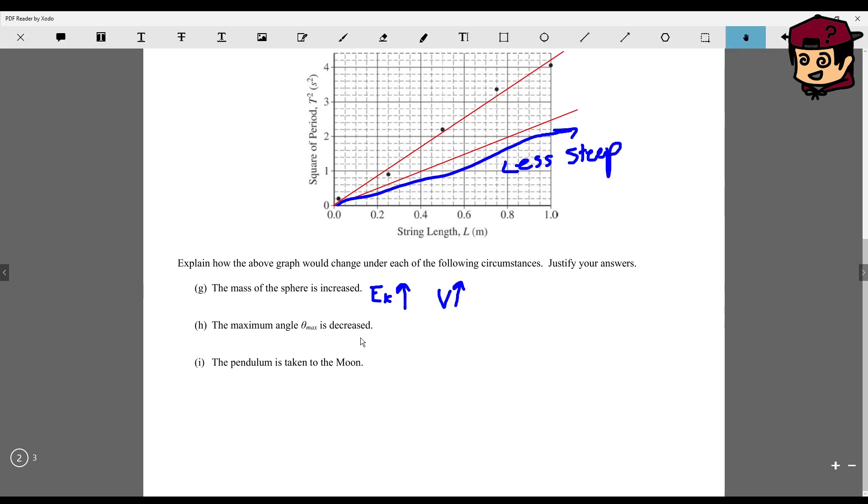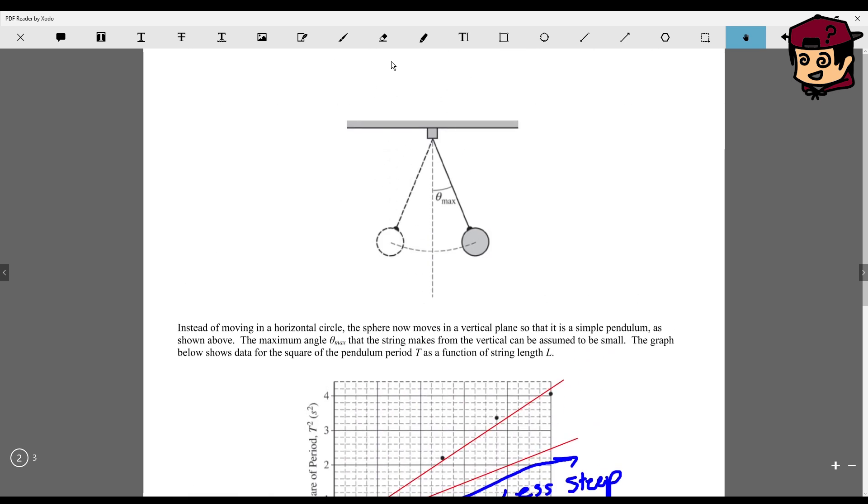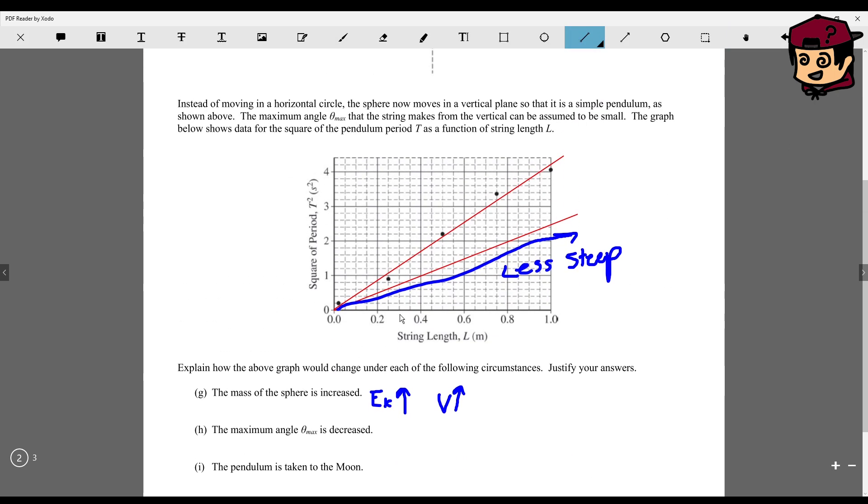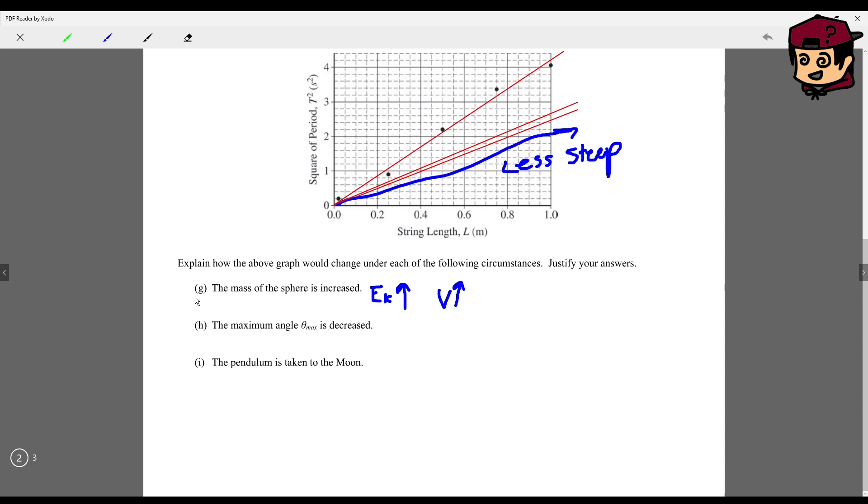Now, if the maximum angle is decreased, that means we're limiting the range of motion. So maybe instead of going from here to here, we're now going from here to here. And if everything else is kept the same, only your distance is smaller. Then again, shouldn't your time take faster? So these two answers should both be less steep.